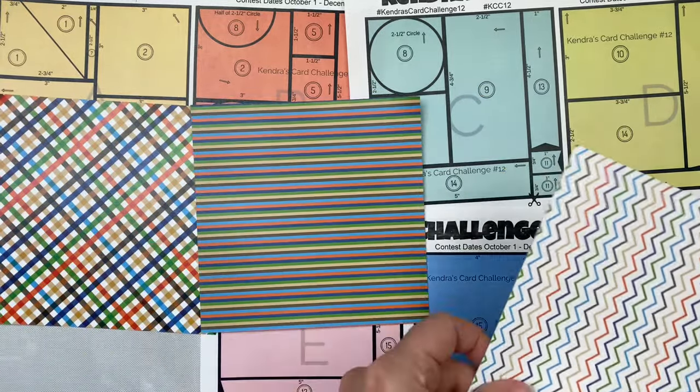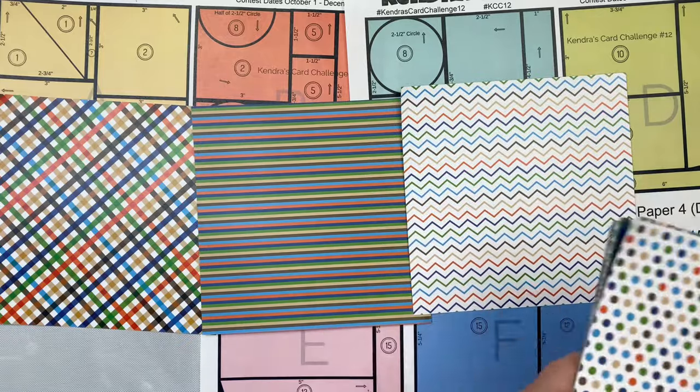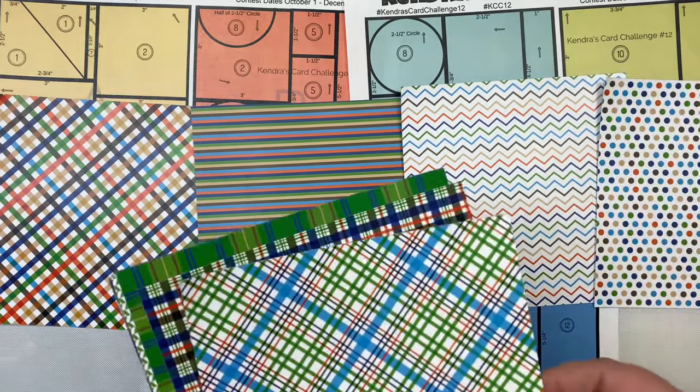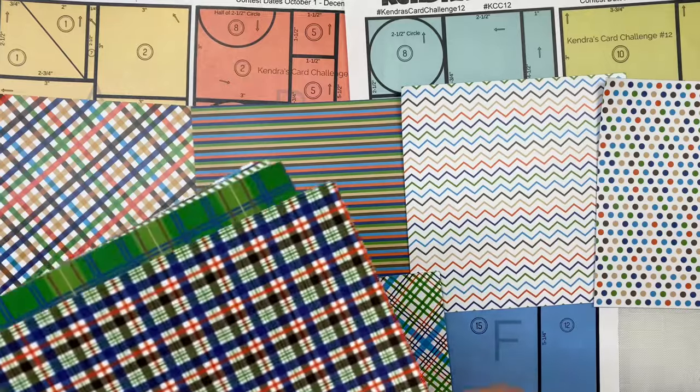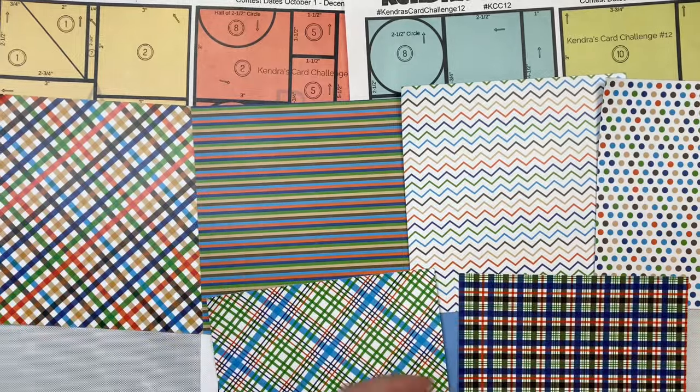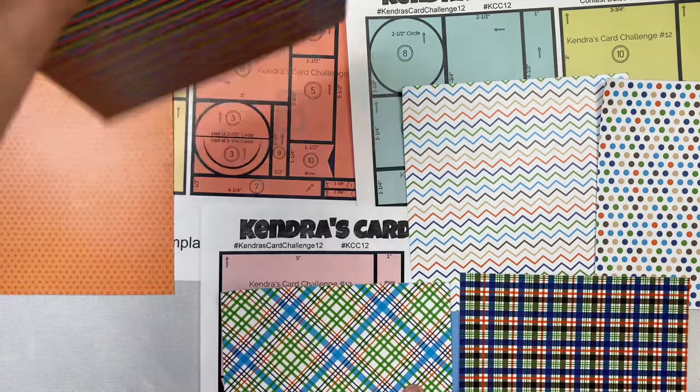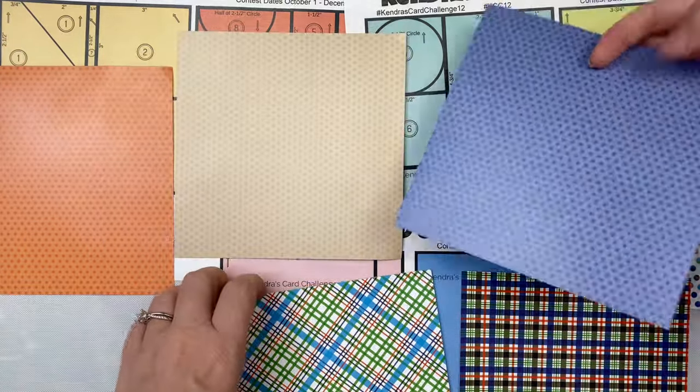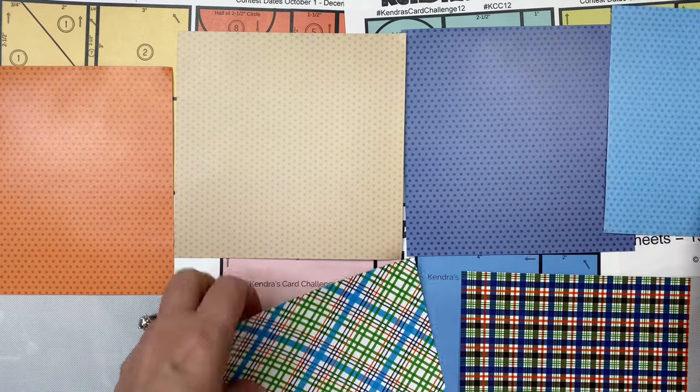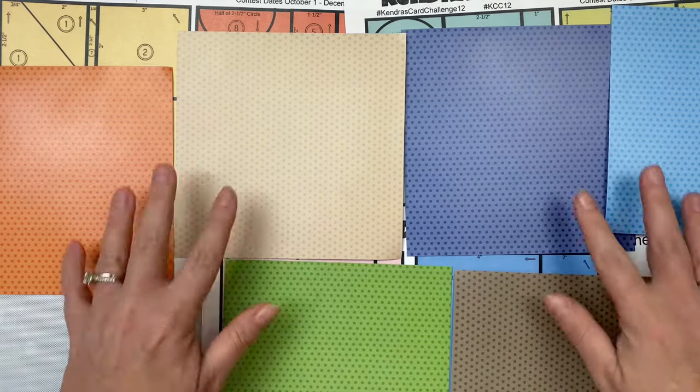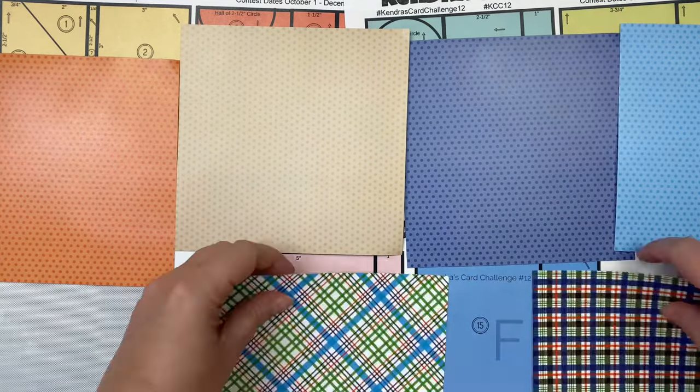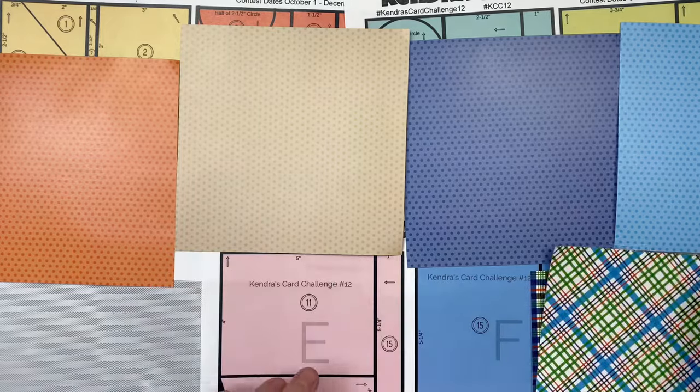As I mentioned before, I'm using challenge 12 to make these cards. The printable includes cutting guides for six sheets of pattern paper and 15 card sketches with instructions. If you're not familiar with my challenges, I'll link a video in the description box so you can get all of the details. These are the cutting guides and the papers that I'm selecting from this paper pad to assign to each of the six papers A through F.